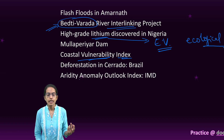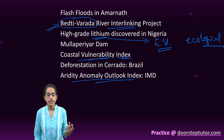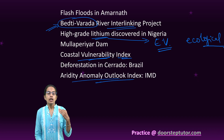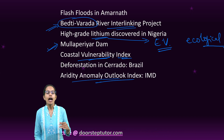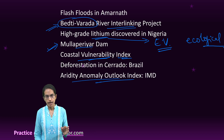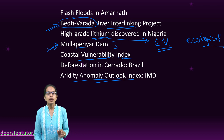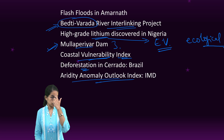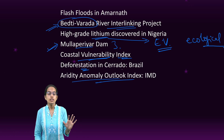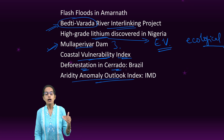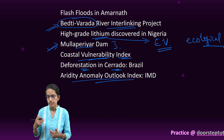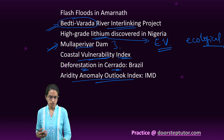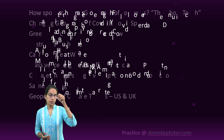Two important indices are the Coastal Vulnerability Index and the Aridity Anomaly Outlook. Dam safety — the dam safety rules that have been introduced and the issue of the Mullaperiyar Dam — are extremely important. Also, deforestation in the Amazon rainforest, specifically in the Cerrado region, how it has occurred and how it has been detrimental, needs to be addressed.